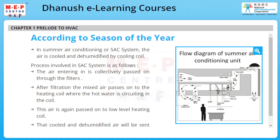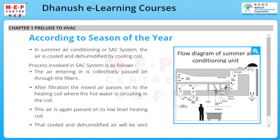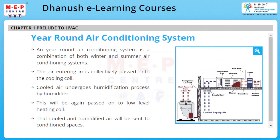A year-round air conditioning system is a combination of both winter and summer air conditioning systems. Air entering is passed to the cooling coil, then undergoes humidification by a humidifier, passed again to a low-level heating coil, and the cooled and humidified air is sent to the conditioned spaces.